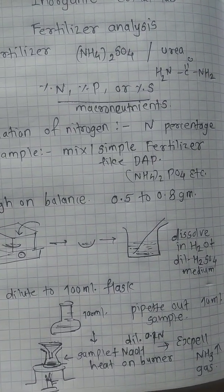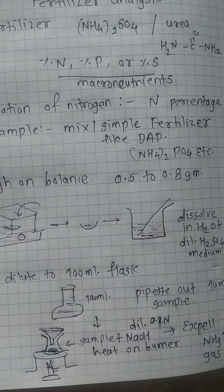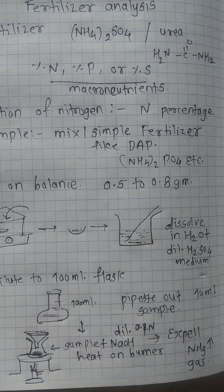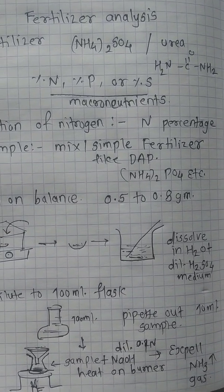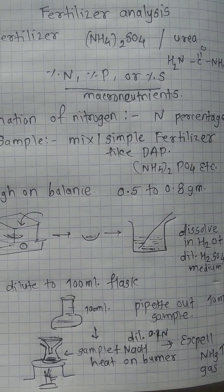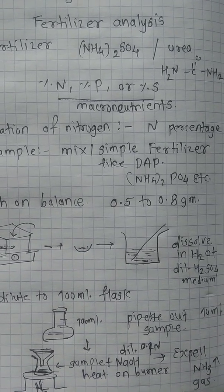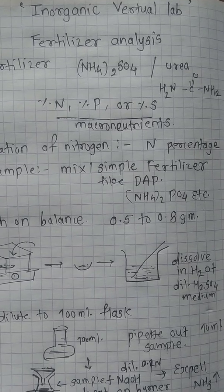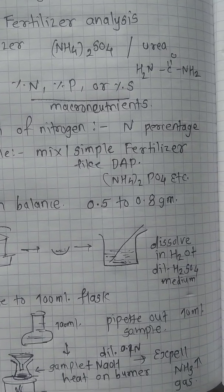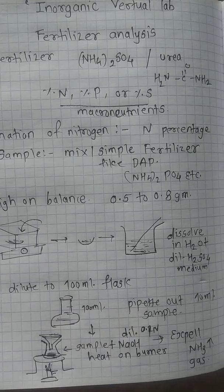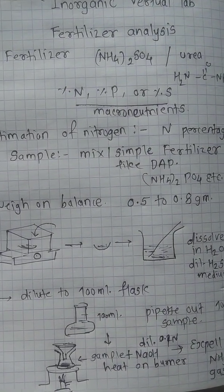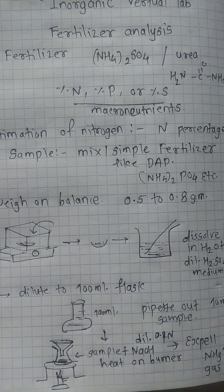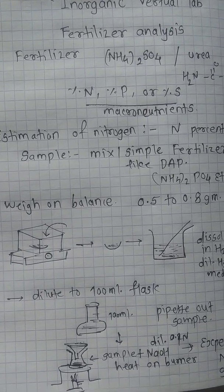That sample is heated for digestion process with dilute 0.1 normal NaOH because a basic medium is maintained for digestion. Heating of the fertilizer sample on the burner causes ammonia to be produced. Excess ammonia is expelled out, and the nitrogen from the fertilizer converts into ammonium hydroxide NH4OH by the reaction of NaOH in the sample solution after heating.